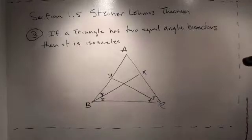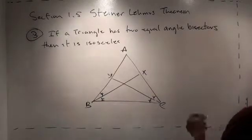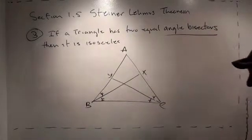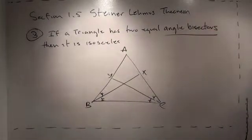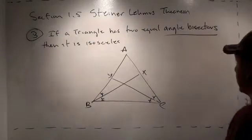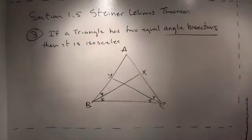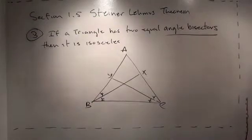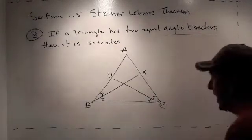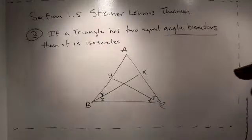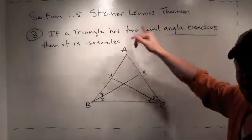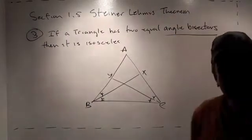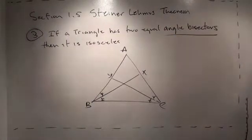Here's our third little theorem: if a triangle has two equal angle bisectors — you probably guessed where this is going — then it is isosceles. The first two looked at equal altitudes and equal medians, and those were easy to prove, so this should be easy too. But it turns out this is actually quite difficult, and this theorem actually has a name: the Steiner-Lemmas Theorem — which means it was probably pretty difficult to prove.